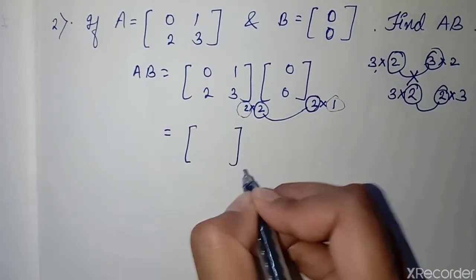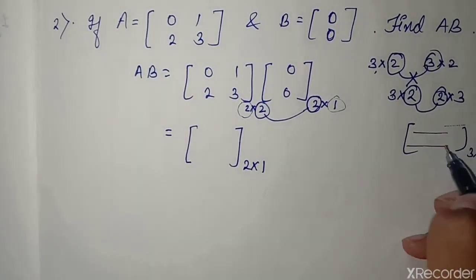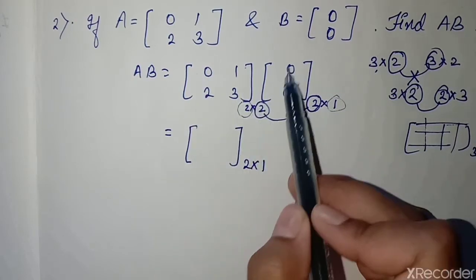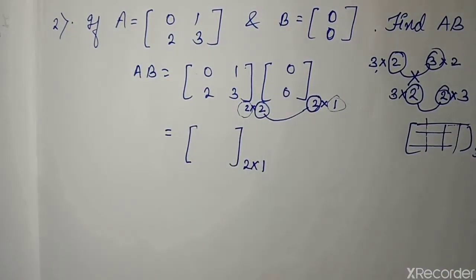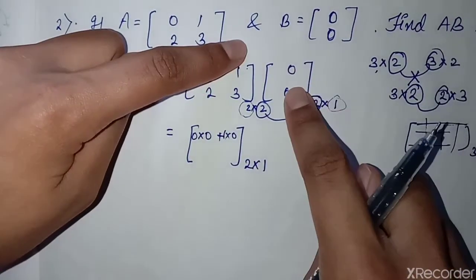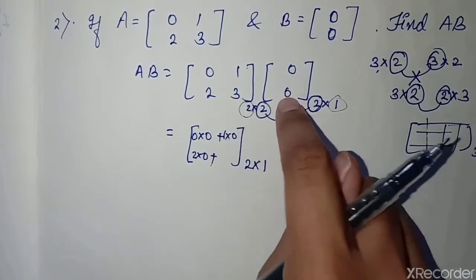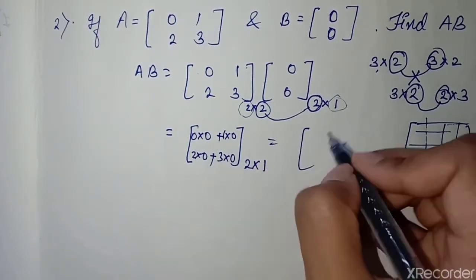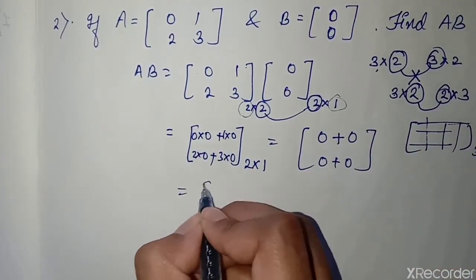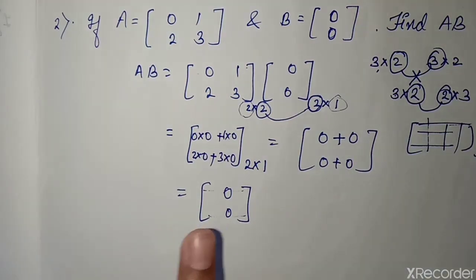The resulting matrix will be 2 into 1 order. Similarly, if we multiply a 3 into 3 order matrix, there are 3 rows and 3 columns. We multiply the first row with the first column, similarly the second row with the second column. So: 0 into 0 plus 1 into 0, then 2 into 0 plus 3 into 0, giving 0 and 0. The result is a 2 into 1 matrix.